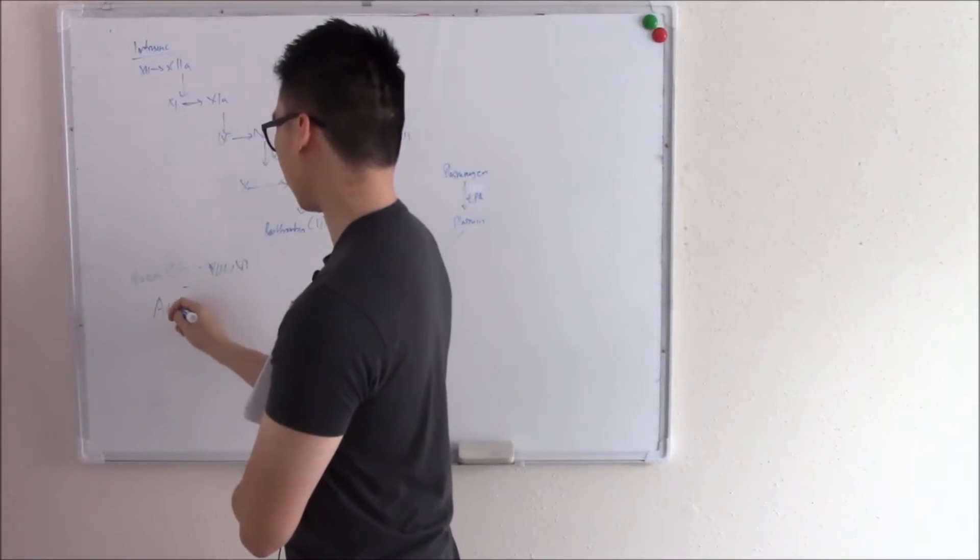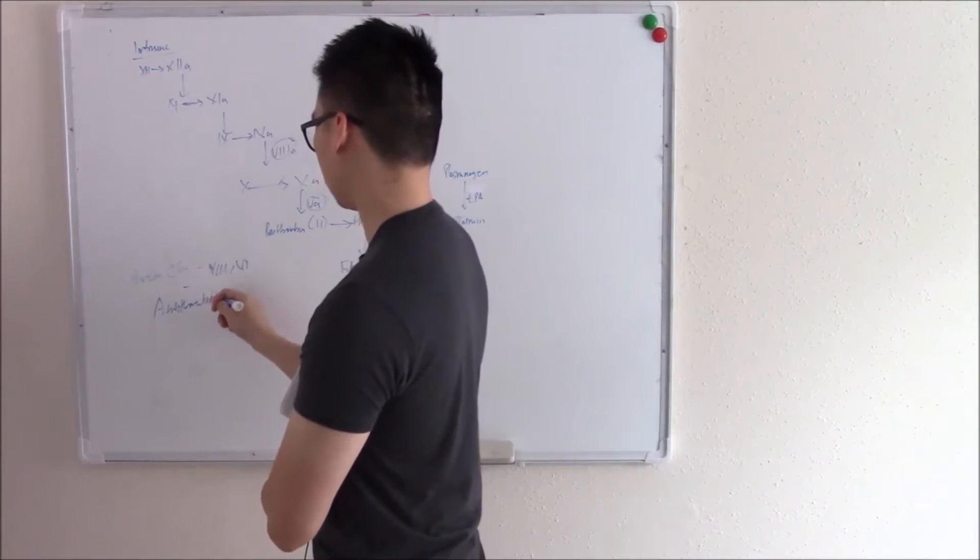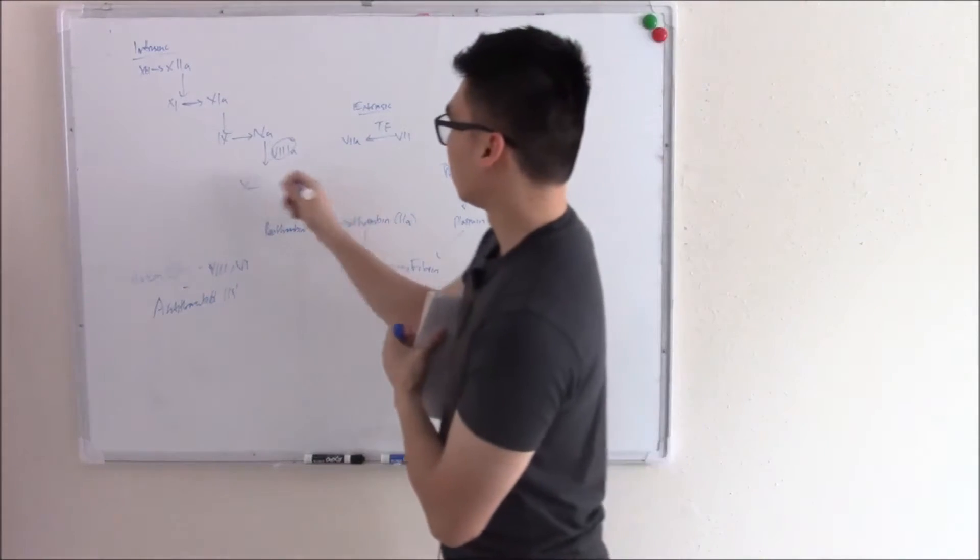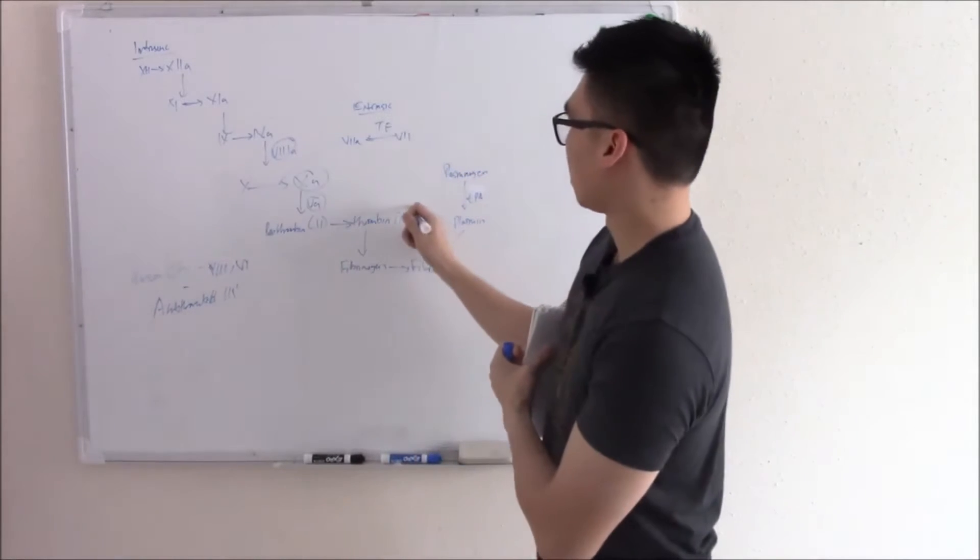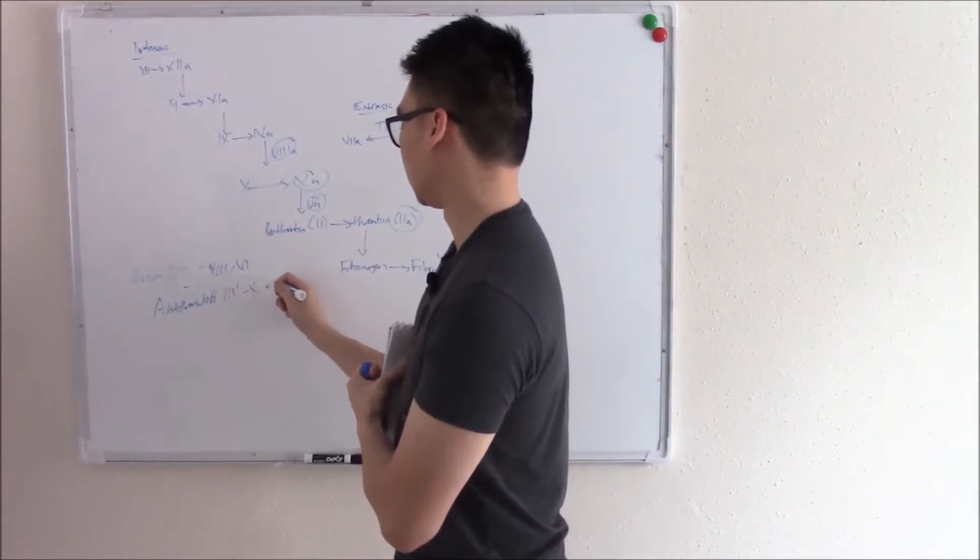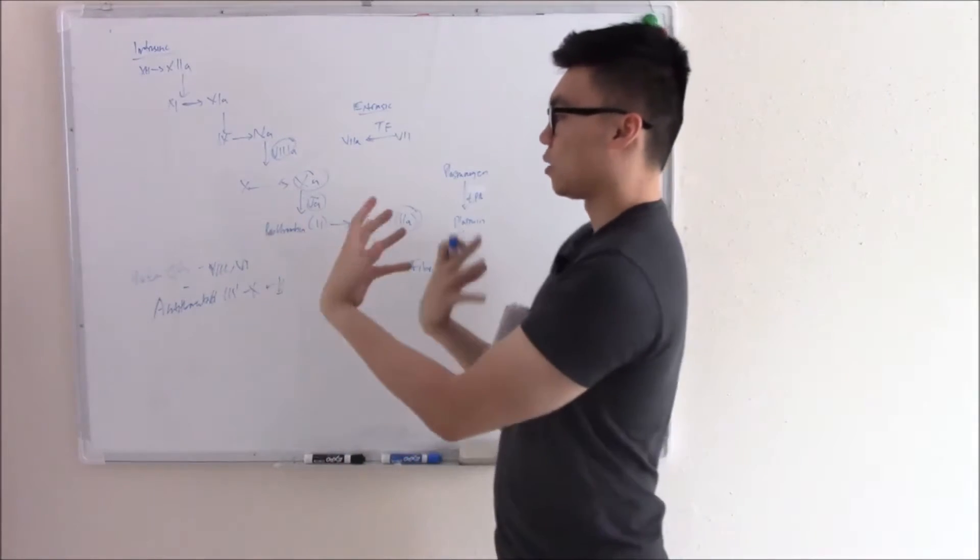And then protein S is just kind of his helper. Something else we have, antithrombin 3. That's the thing that works on a lot of coagulation factors, but namely 10 and 2, thrombin. So 10 and 2.